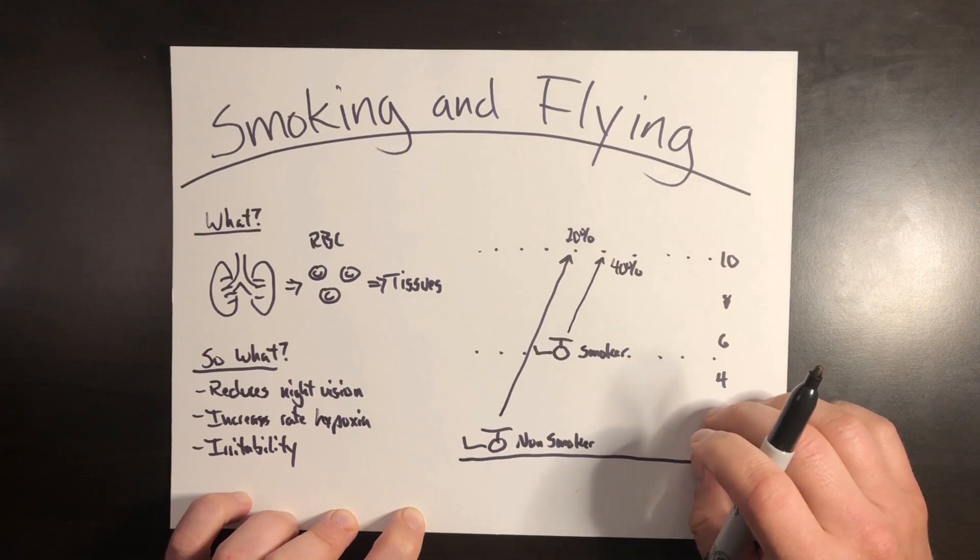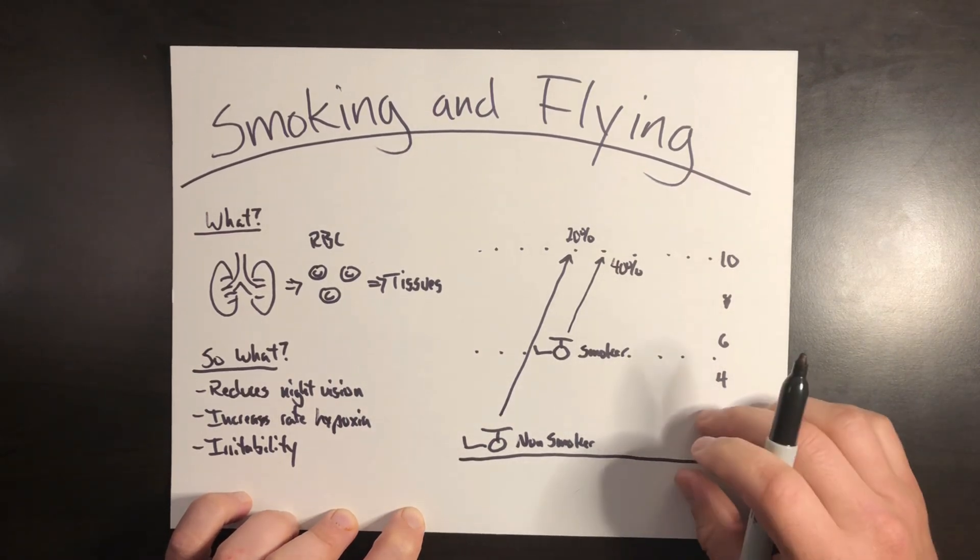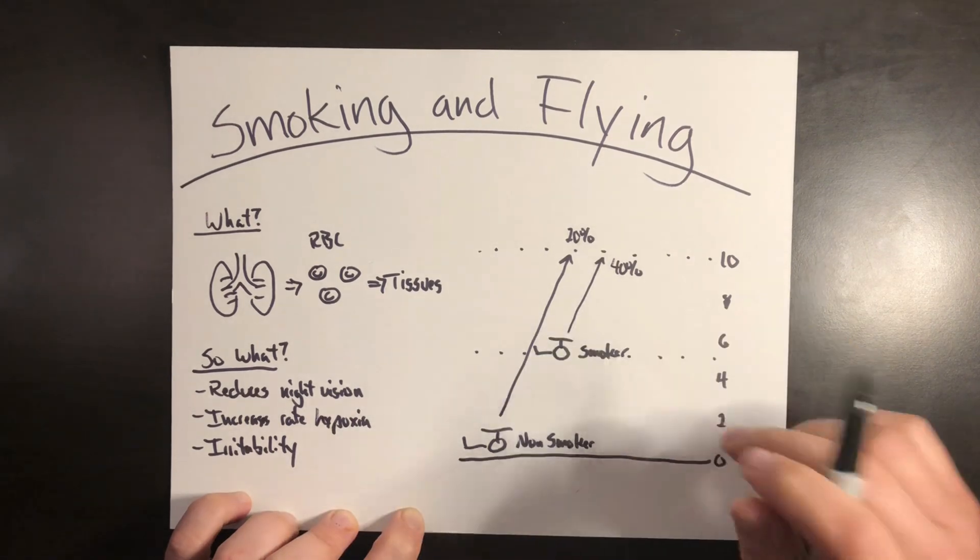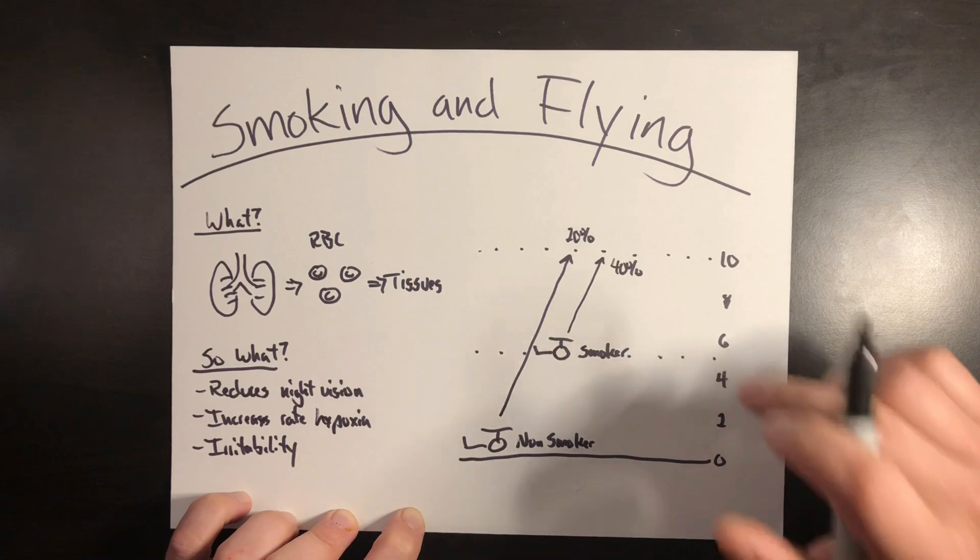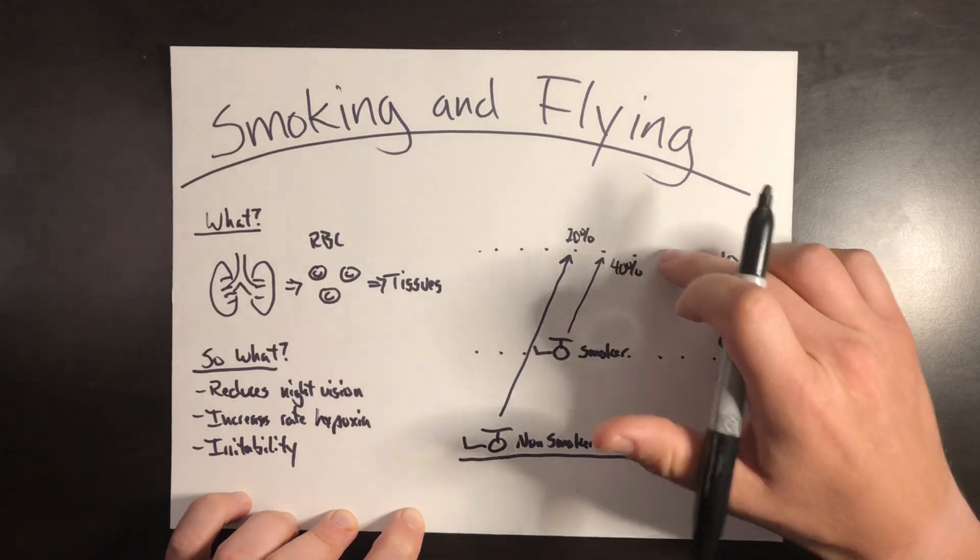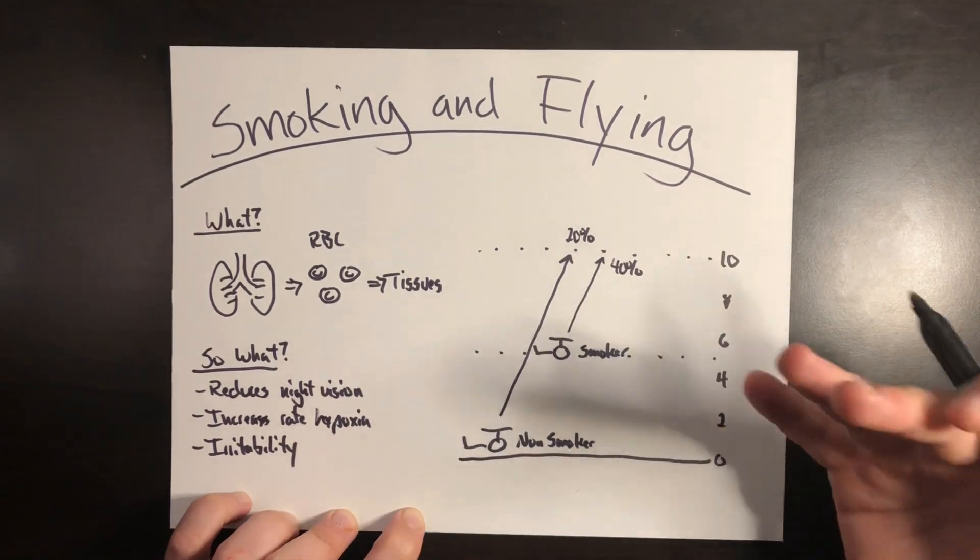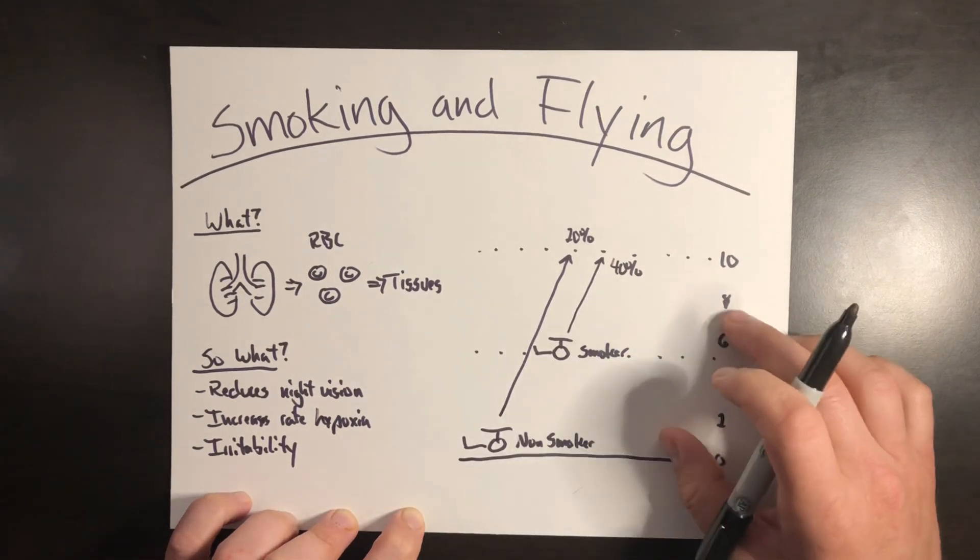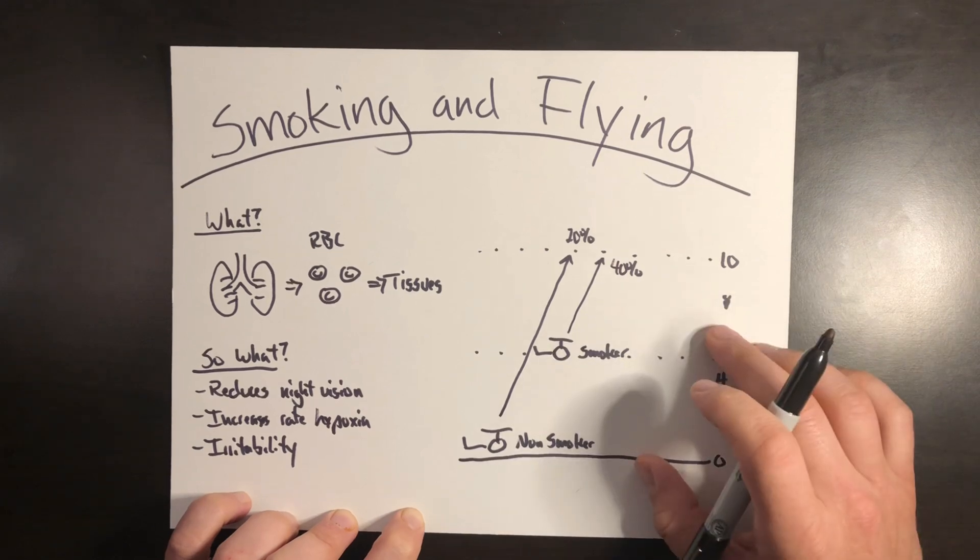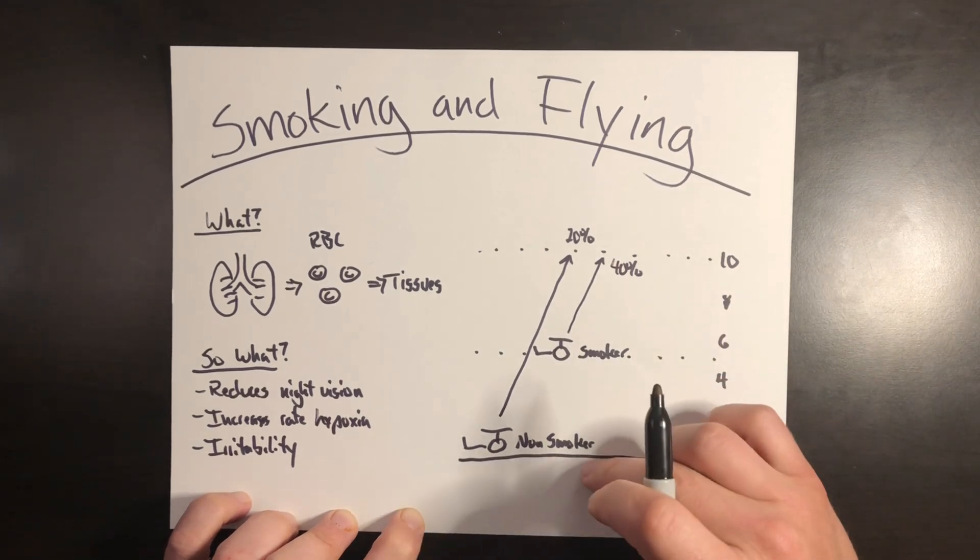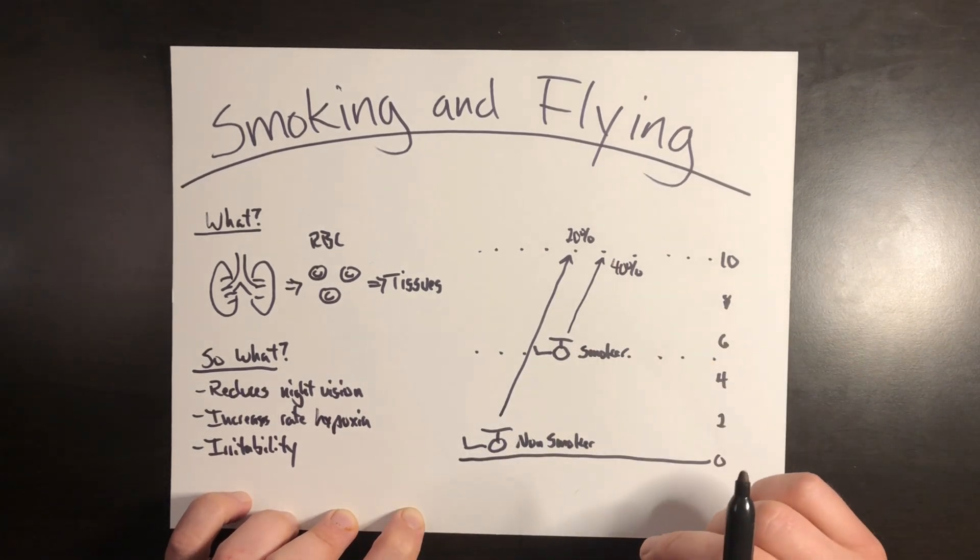That combined with a reduced night vision could be a killer combination in flight for just the bad habit that you have. But if you're at 5,000 feet as a non-smoker, physiologically at 10,000 feet, now you're going to have things like errors in judgment, drowsiness, reduced coordination, and reduced alertness just because your brain isn't getting enough oxygen. Something that a non-smoker is not going to have when operating at, say, 5,000 feet.